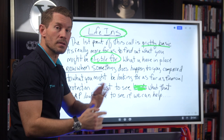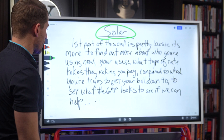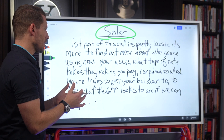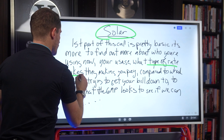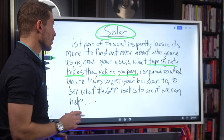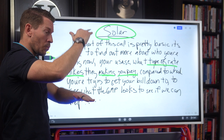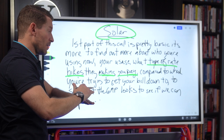For solar: 'The first part of this call is pretty basic. It's really more for us to find out kind of who you're using now, your usage, what type of rate hikes they've been making you pay compared to what you're trying to get your bill down to, to see what that gap looks like, to see if we can help. And then towards the end of the call, if you feel that it might be what you're looking for, we can talk about possible next steps. Does that help?' 'What type of rate hikes they've been making you pay compared to what you're trying to get your bill down to' — that builds the gap right there.